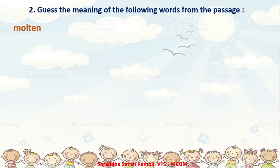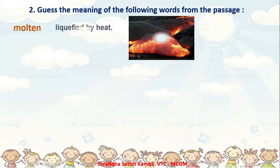The first word is 'molten.' We have used this word again and again in this passage. What is molten, children? Molten means liquefied by heat. Anything which is solid and when you heat it, it becomes liquid - that liquid thing is called molten. So anything which is made liquid because of the heat which is given to it is called molten.